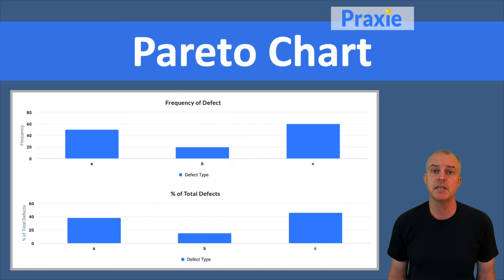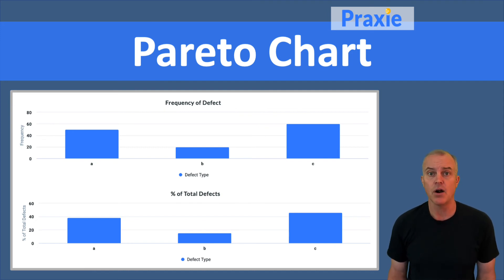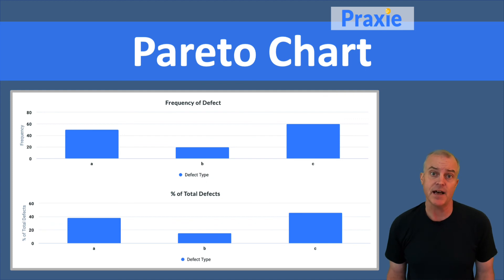That chart will give you a summary of your defects and allow you to identify which of those defects in your process are most significant, then allow you to create projects to understand them better and resolve them. That's the value of a Pareto chart.